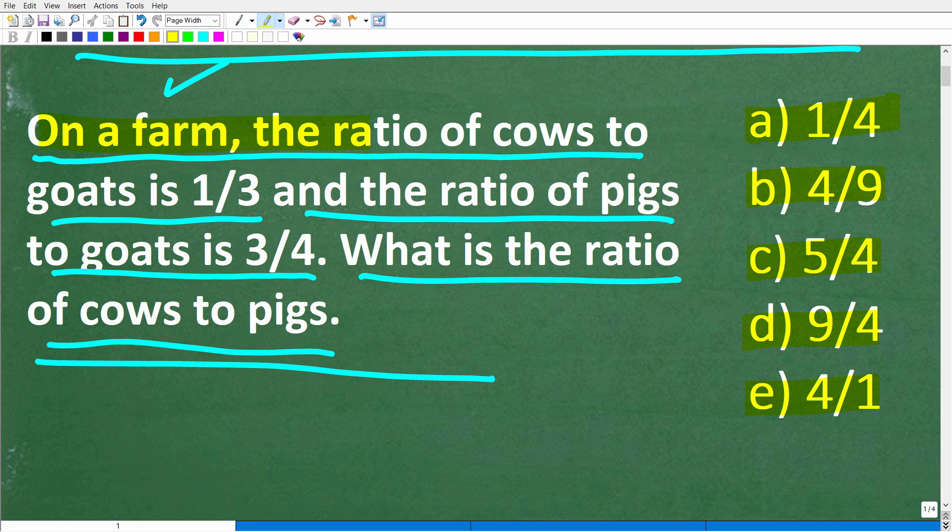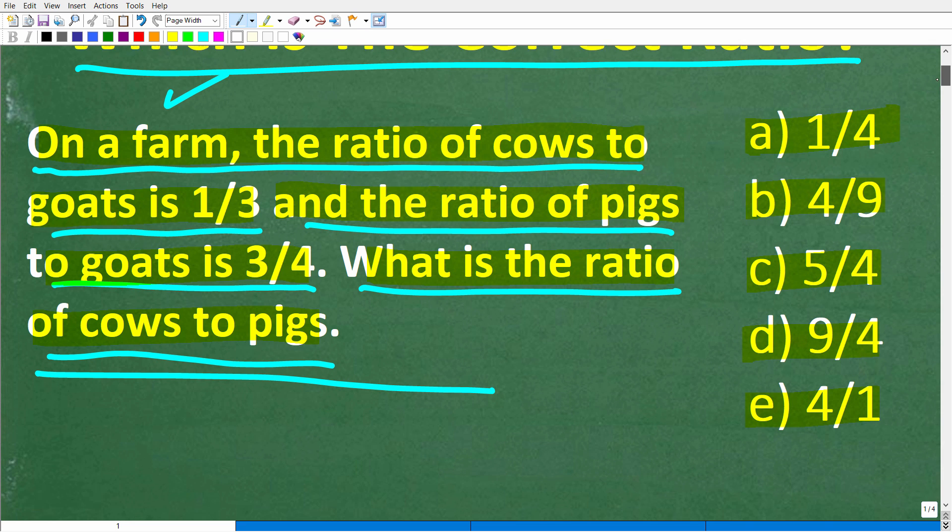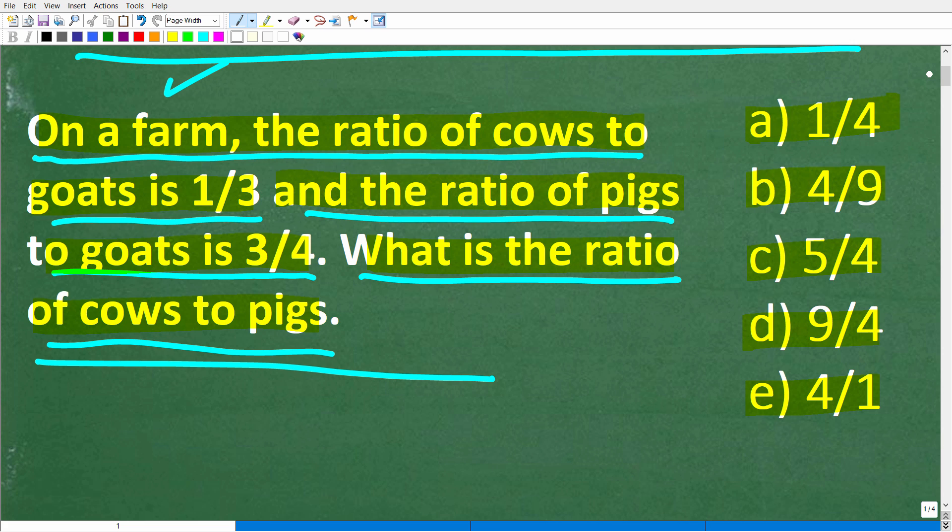Once again, on a farm, the ratio of cows to goats is 1 to 3, and the ratio of pigs to goats is 3 to 4. What is the ratio of cows to pigs? All right, so let's take a look at the answer. The correct answer is B, 4 to 9. If you got this right, you're definitely going to get a happy face, an A plus, a 100% and a certificate of excellence for being a certified professional in the area of ratios and proportions.